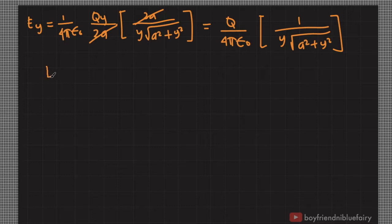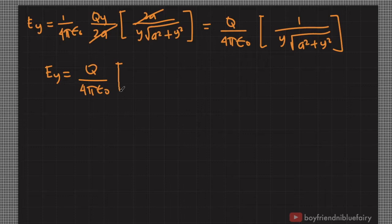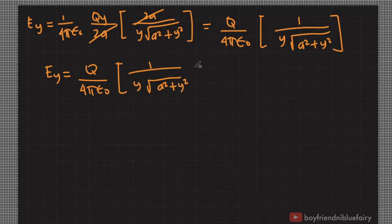E sub y is therefore equal to Q over (4 pi epsilon naught) times 1 over (y times the square root of a squared plus y squared). Let's now solve the z-component of the electric field.